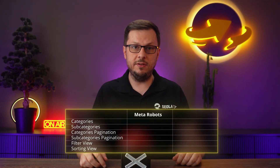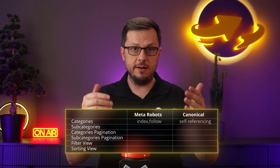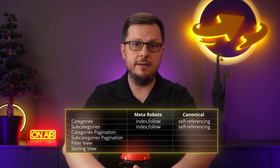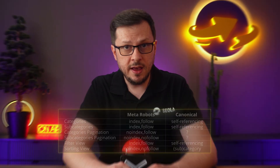Have you ever tried to set up the meta robots and canonical tags to the right values from an SEO perspective for categories, subcategories, the pagination, filter and sorting views? If you have succeeded in it, you already know that the impact of setting them in the perfect way results in big organic traffic spikes due to much better rankings. It is always worth the effort.